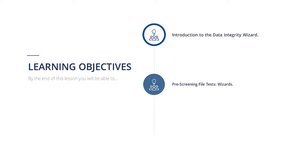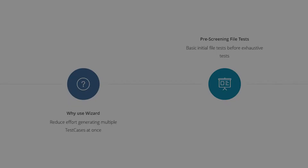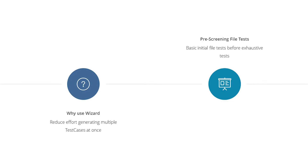In this lesson you will learn how to create and maintain file prescreening tests using the DI Wizard. Prescreening file tests are basic initial tests that are performed on files before going for exhaustive tests. With standard Tosca we can create a subset of these prescreening vital checks and field tests, but writing steps for every table and column for large amounts of files and databases is a tedious job.